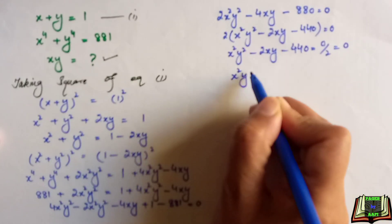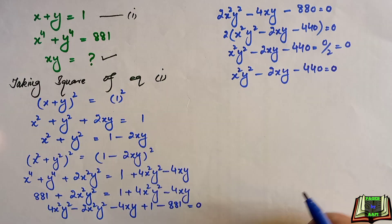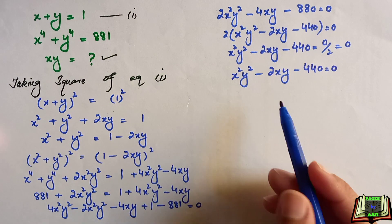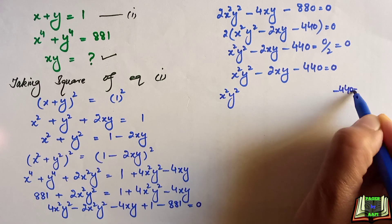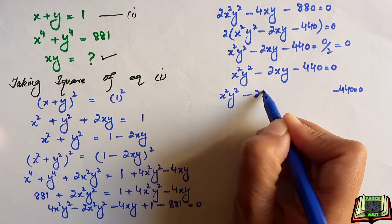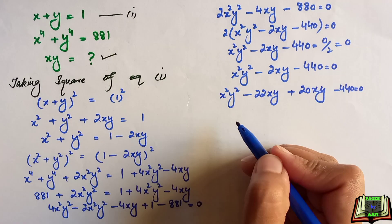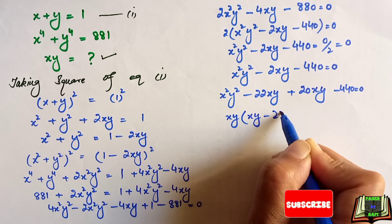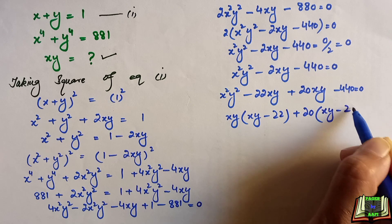Writing the equation once again: x squared y squared minus 2xy minus 440 equals 0. This has become a quadratic equation. We will solve it by the factorization method. We split the middle term as minus 22xy plus 20xy. Taking xy as common from the first two terms, we get xy times xy minus 22, and taking 20 as common from the last two terms gives 20 times xy minus 22, which equals 0.